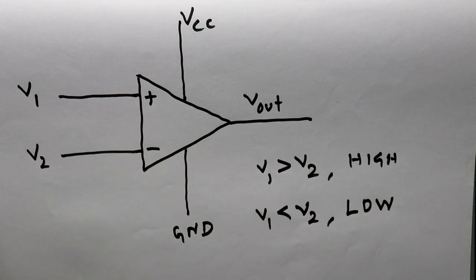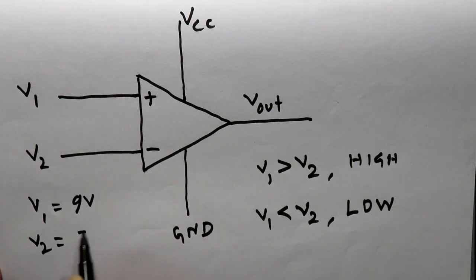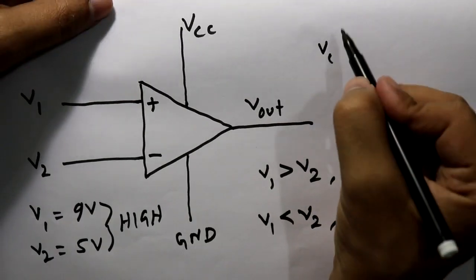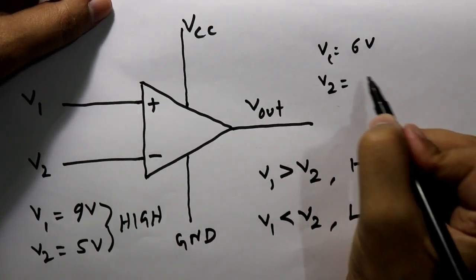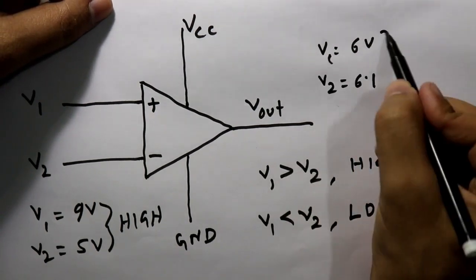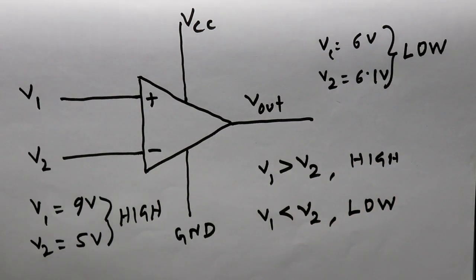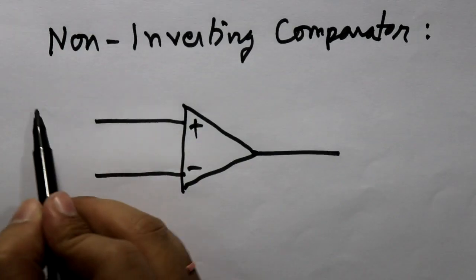As an example, if V1 is 9 volts and V2 is 5 volts then our output will be high. And if V1 is 6 volts and V2 is even 6.1 volts then our output will be low. Now let's see the non-inverting comparator.